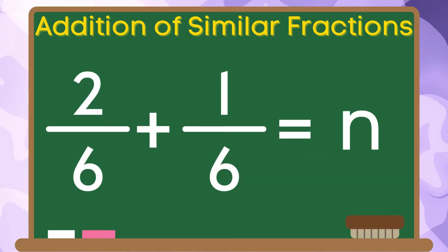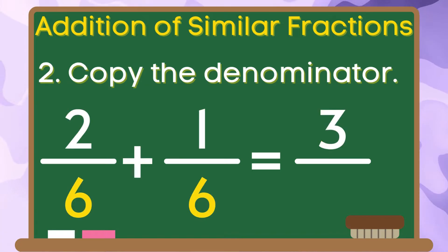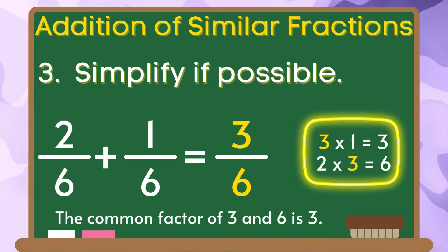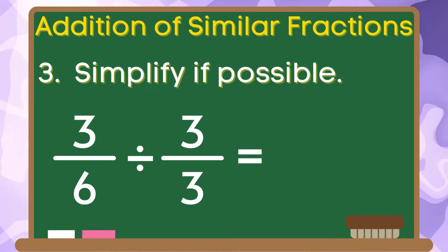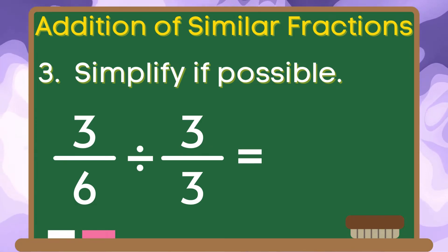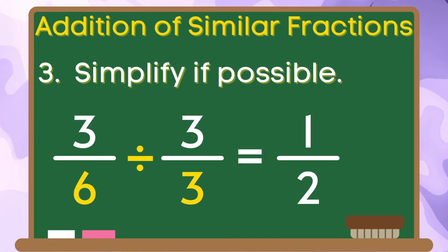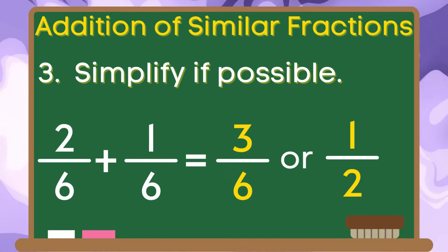Now, let us have the last example. Two-sixths plus one-sixth is equal to n. Let us add the numerators: two plus one is equal to three. Let us copy the denominator six. And for the last step, let us simplify the sum three-sixths. The common factor of three and six is three. Therefore, we are going to divide the numerator three by three and the denominator six by three. Three divided by three is one; six divided by three is two. Therefore, the simplified fraction of three-sixths is one-half.